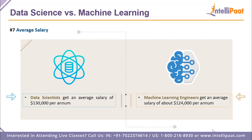On average salary: data scientists earn around $130,000 per annum, while machine learning engineers earn approximately $124,000 per annum. Both are very lucrative careers that pay extremely well and rank among the top jobs in today's world.